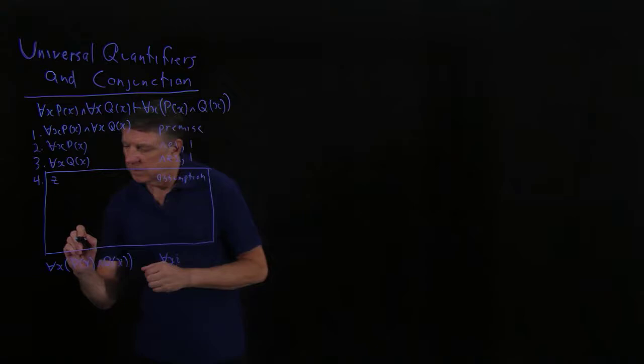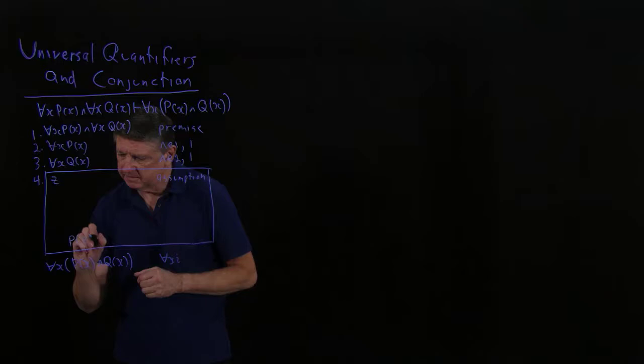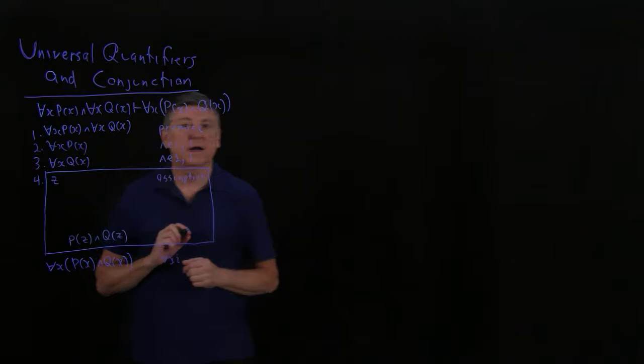And that's the bottom line of my box. So I'll offset it, which is my custom. And I'll say that is P of z and Q of z. And that's what I'm trying to prove.